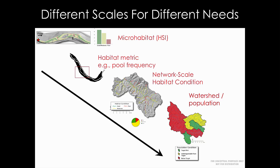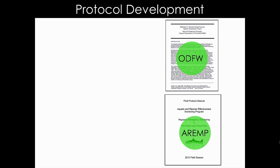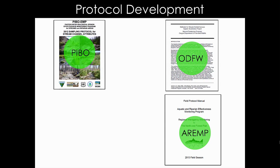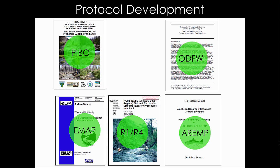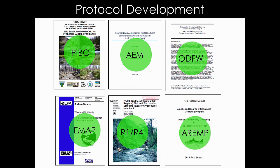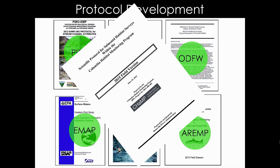Getting into the nitty-gritty of protocol development — we've leveraged previous protocols when developing CHAMP. Those include the Aquatic Riparian Effectiveness Monitoring Protocol from the Northwest Forest Plan, Oregon Department of Fish and Wildlife's Aquatic Inventory Protocol, PIBO which is the U.S. Forest Service fish habitat monitoring protocol, EMAP and EPA protocol, R1/R4, and the Aquatic Action Effectiveness Monitoring Protocol — a companion project within BPA. All of these protocols have been used to develop CHAMP.